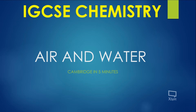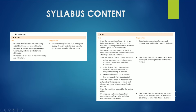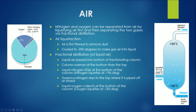Hey guys, welcome to another video. Today we're going to be going through the topic of air and water. So air is composed of nitrogen being 78% and oxygen being 21%. The other percentage is comprised of argon and other noble gases along with carbon dioxide.